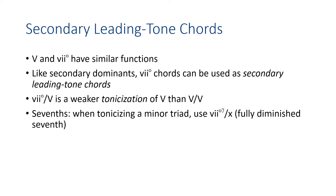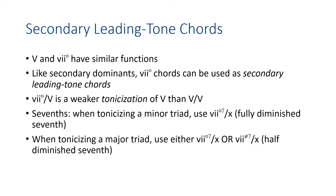Just a couple of things to keep in mind: when you're using a secondary leading tone chord, if you're tonicizing a secondary key that's minor, or tonicizing a minor triad, then it's going to be a fully diminished seventh chord in that secondary key. If you're tonicizing a major triad — doing a seven-one in some other major key — you can use either the fully diminished seventh or a half diminished seventh. The one that would naturally occur in that key would be half diminished, since that's what we get in major keys. But it's not uncommon for composers to prefer the fully diminished seventh chord.